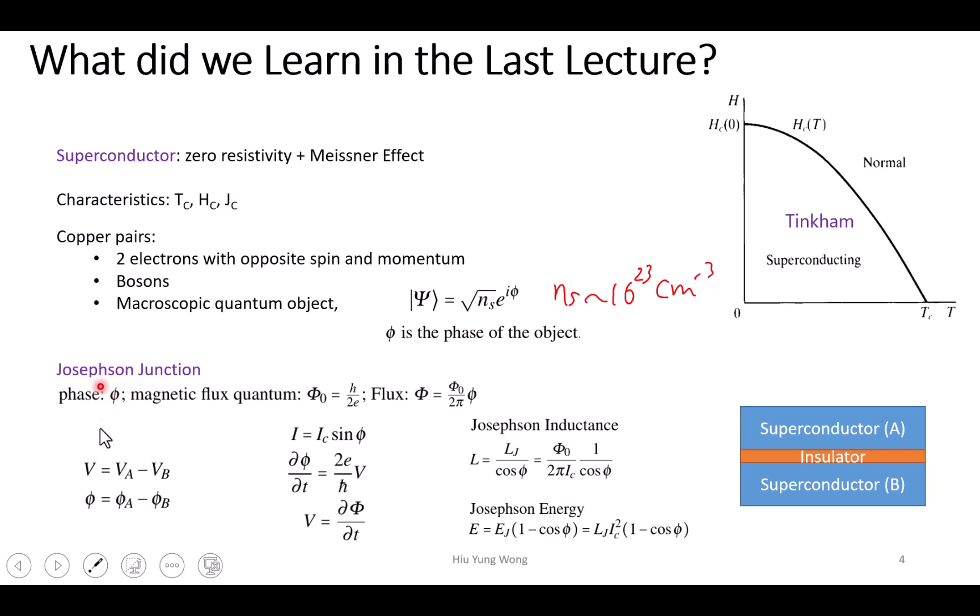First, this φ is the phase. It's the phase difference of these two electrodes. So φ is φ_A minus φ_B. For the Cooper pairs on each side, I can describe them as a collective object. They have a phase, and the difference of the phase is φ.